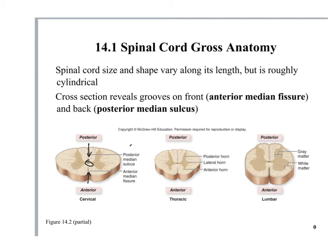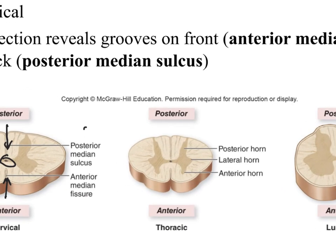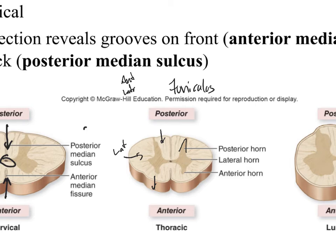The gray matter of the spinal cord is described by directional terms: a posterior horn toward the back, lateral horns on each side, and an anterior horn toward the front. The white matter is described in terms of columns or funiculi: posterior, lateral, and anterior funiculi.